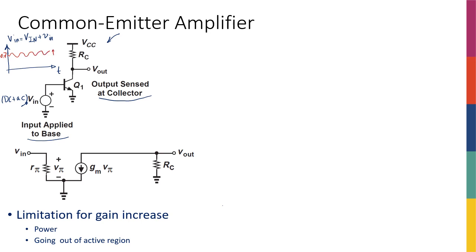The signal has a peak-to-peak value of about one millivolt, so it goes from 700.5 to 699.5 millivolts. The DC part ensures the transistor is biased, and the AC part is the signal — the small variations we care about. We want to calculate the gain of the circuit applied to those little variations.